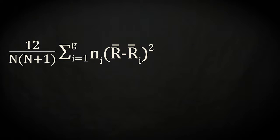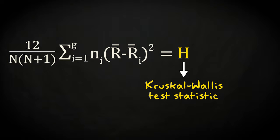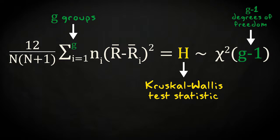The value that is calculated through this formula is called the Kruskal-Wallis test statistic. It follows a chi-square distribution. If you would have g groups, the test statistic has an approximate chi-square distribution with g minus 1 degrees of freedom.